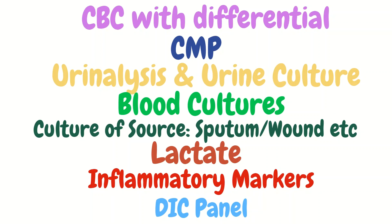The team may also order additional lab tests like inflammatory markers and a DIC panel. Inflammatory markers like procalcitonin help determine the level of inflammation throughout the body — the higher the level, the higher the inflammation. The DIC panel will let us know if clotting factors are being consumed throughout the body and signal whether they need to be replaced.